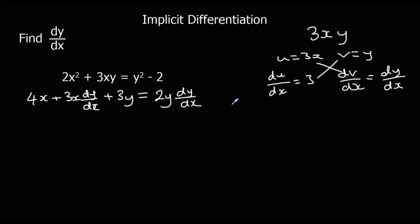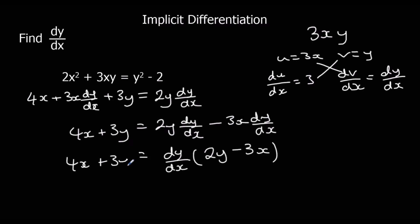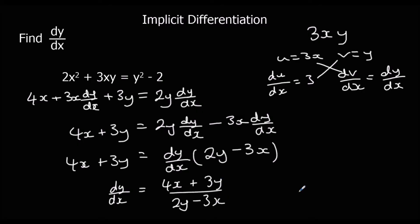We rearrange to make dy/dx the subject. Taking 3x dy/dx off both sides gives 4x plus 3y equals 2y dy/dx minus 3x dy/dx. Factorising out dy/dx gives dy/dx times (2y minus 3x) on the inside. Dividing both sides by (2y minus 3x), we get dy/dx equals (4x plus 3y) over (2y minus 3x).